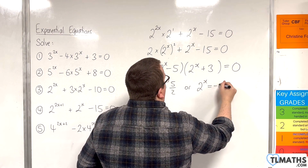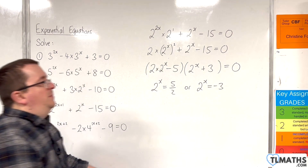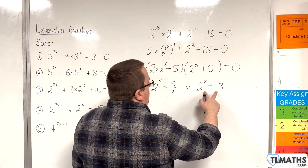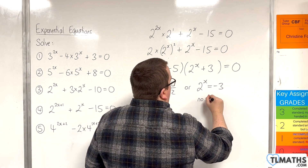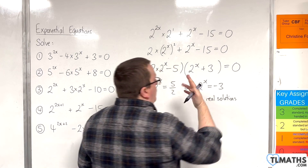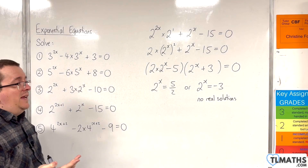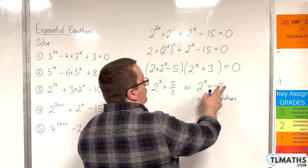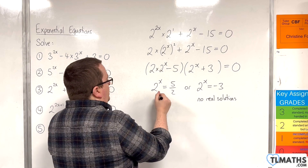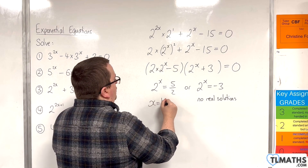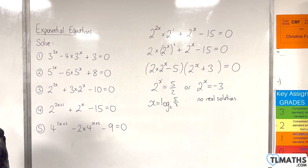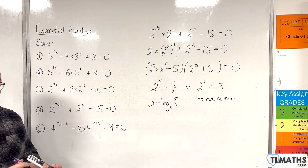Or 2 to the x would have to equal negative 3 for the other bracket to be 0. This equation has no real solutions — the graph of y equals 2 to the x doesn't cross below the x-axis, so it can never be negative, and you can't take the logarithm of a negative value. For 2 to the x equals 5 halves, x equals log base 2 of 5 halves. That is the single solution to question number 4.